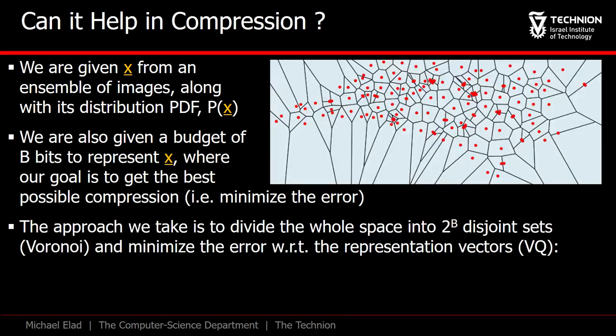The best strategy for handling this problem is clustering, or vector quantization, in which the signal space is divided into 2 to the power b non-overlapping and fully covering regions, as shown in this figure. In fact, this division emerges naturally as the minimizer of this expression, in which there are 2 to the power b centers of these clusters xk, and our goal is to find these representations so as to reduce the expected error.